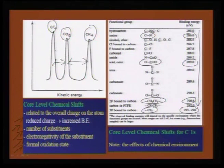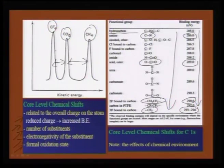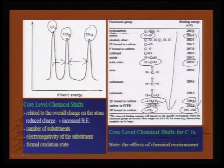Carbon 1s at 285 eV (C–H hydrocarbon) serves as a very useful calibrant. Other functional groups shift relative to this: C–N at ~286 eV, keto/ester groups at ~289 eV, fluorocarbons at ~290 eV, and CF3 at ~293 eV. This allows mapping of impurities such as carbonate (from hygroscopic materials absorbing CO2) and assigning the chemical environment of acetate or other carbon-containing species in materials.